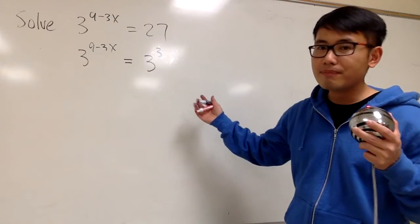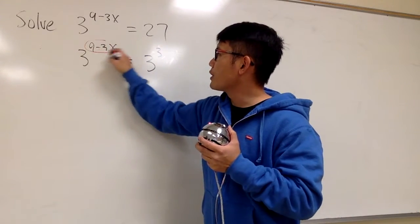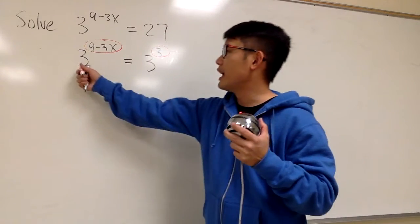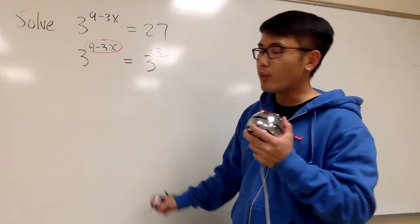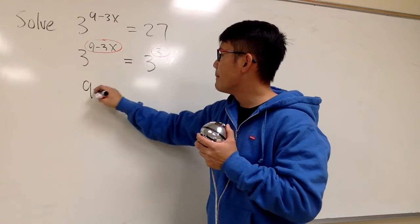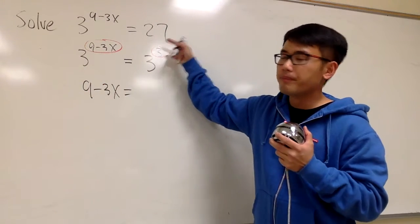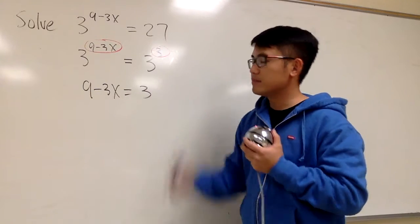Why do I want to do that? Because now, the power here must match with the power there. Because they have the same base 3, so we can conclude that we must have 9 minus 3x equals to this 3 right here. The power has to match.